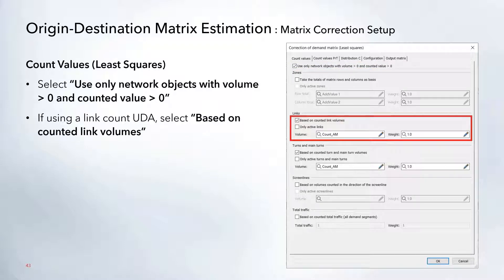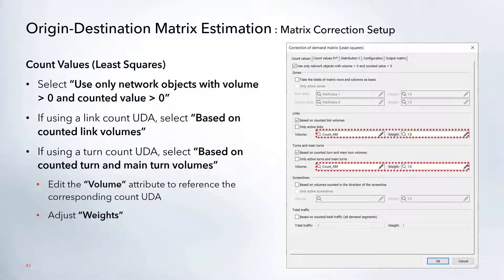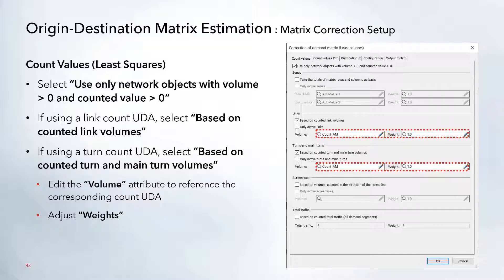If you have a link count UDA, select the 'based on counted link volumes' option in the link section. Similarly, if you have turn data, you can choose the turn option under turns and main turn. From here you'll want to add in that count UDA — clicking the volume option is where you choose that UDA. For least squares there's also a weight option, so if link data is more reliable you can increase that weight so the correction places more emphasis on links rather than turns.